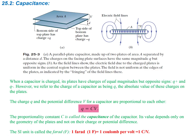When a capacitor is charged, its plates have charges of equal magnitudes but opposite signs. However, we refer to the charge of a capacitor as being Q — just Q. So the absolute value of these charges on the plates — it's not the absolute values added together, it's basically what the magnitude of one plate of charge is going to be. The charge Q and the potential difference V for a capacitor are proportional to each other, given by this equation, where C is going to be some constant that depends on the geometry, and we call that capacitance. It's important to note that the value only depends on the geometry of the plates — it has nothing to do with the charge or the potential difference.